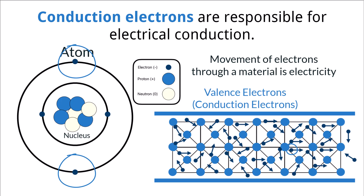Valence electrons are better able to move between atoms, and they will randomly move within the copper atom. However, the random movement is not enough energy to power electrical circuits. These electrons must be moved together in one direction to produce enough electric energy. To do this, a force must be applied.